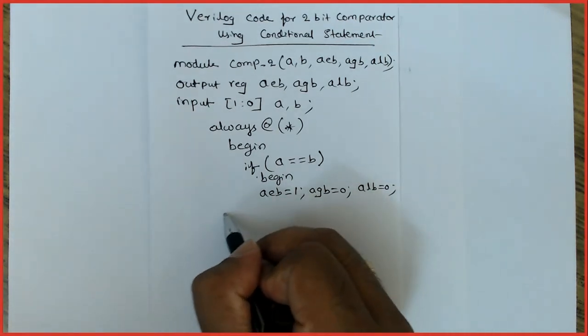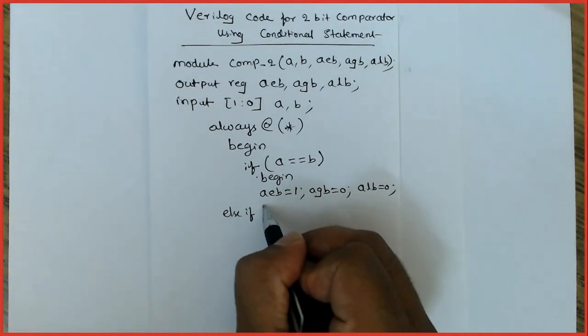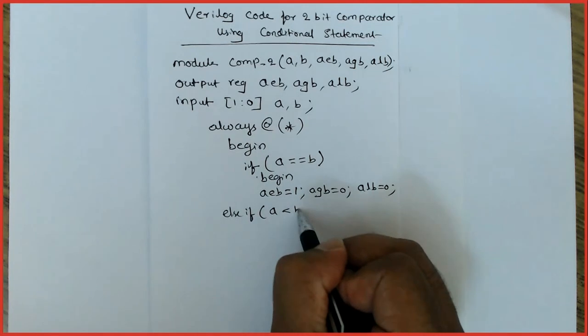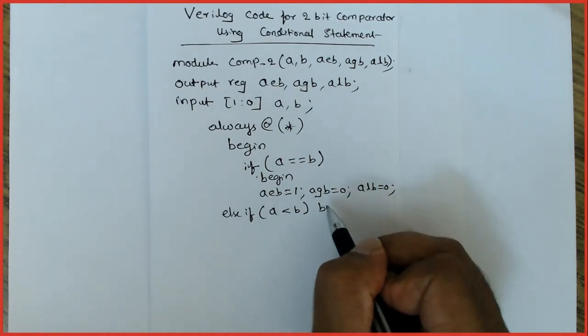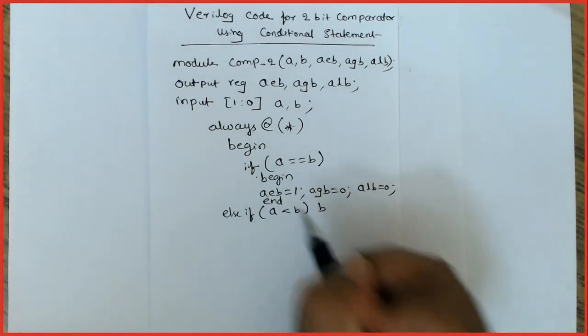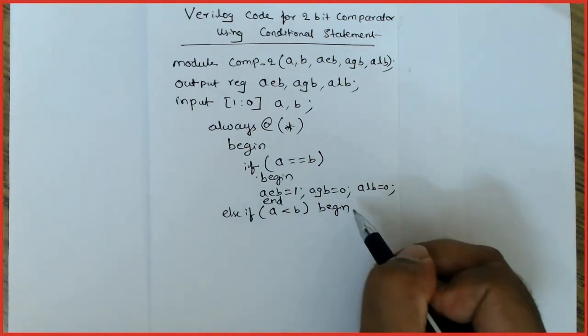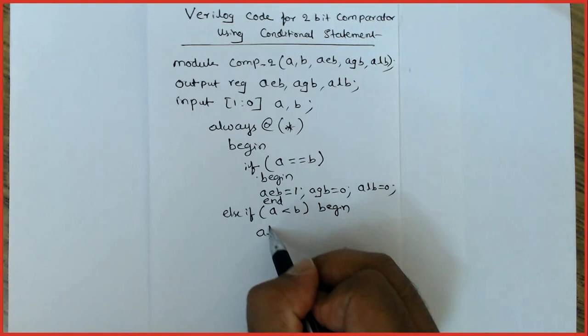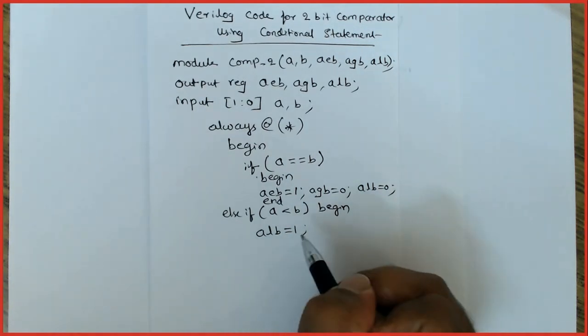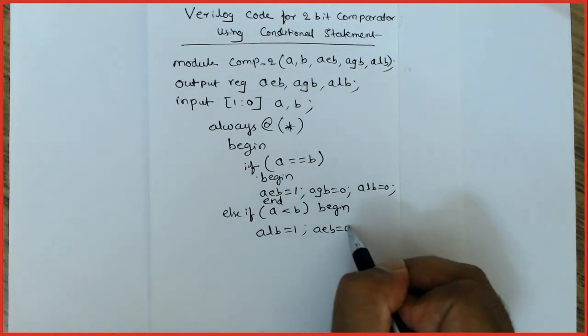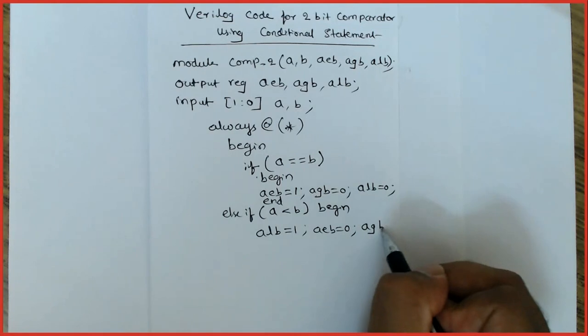Next, else if a less than b, begin. I forgot to end it. End. Begin—so now alb should be made 1, aeb should be made 0, and agb should be made 0. End.